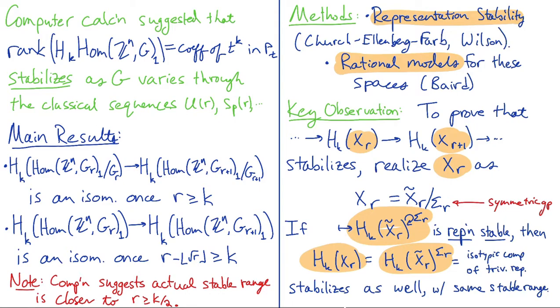So as r varies, k is a fixed degree of homology, and as r varies, we're getting bigger and bigger symmetric group actions. And that's where we're seeing the representation stability. So not only do we get representation stability, but the range in which the isotypical component of the trivial representation stabilizes is at least as good as the range in which all representations are stabilizing. So at least you have a bound on the stable range.